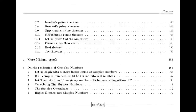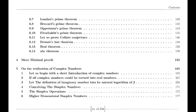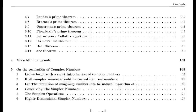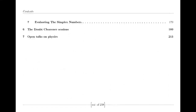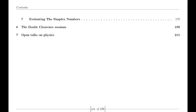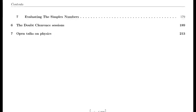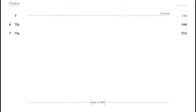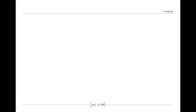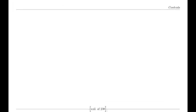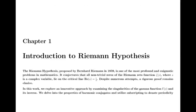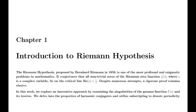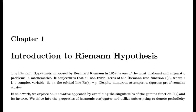Riemann was also influenced by the Dirichlet eta function, defined by an alternating series. This function is closely related to the zeta function and provides valuable insights into its behavior, particularly for values of s less than 1. The relationship between the eta function and the zeta function is encapsulated in a simple formula involving the gamma function and powers of 2, which helps in understanding the zeta function's properties across different regions.